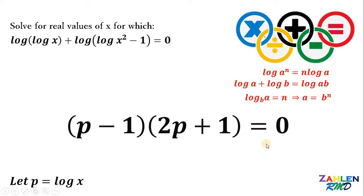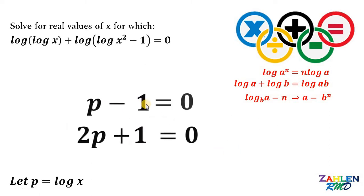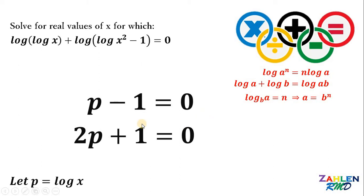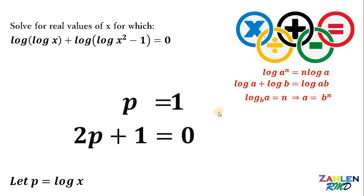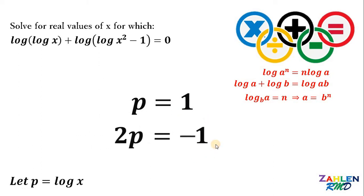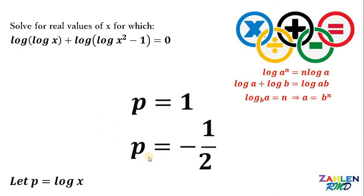Since the product equals 0, at least one factor must equal 0. So either p minus 1 equals 0, giving p equals 1, or 2p plus 1 equals 0. Subtracting 1 and dividing by 2 on the second equation gives p equals negative one-half.